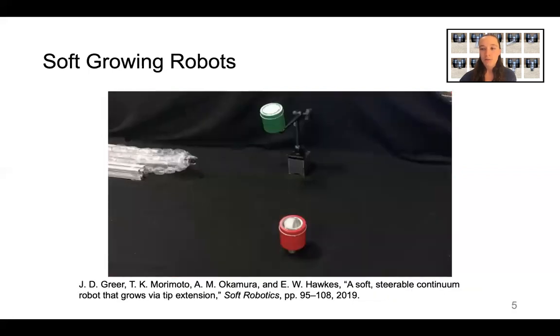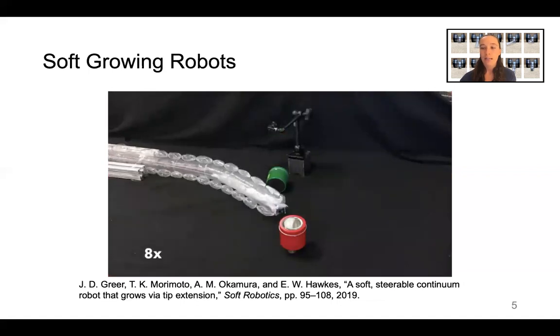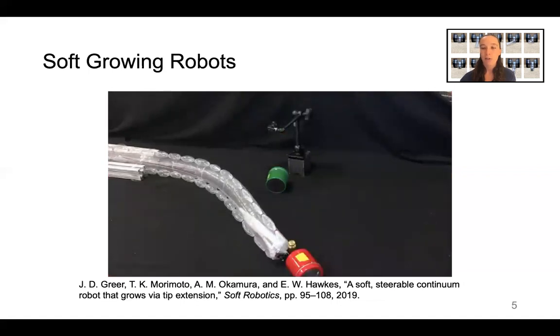The addition of external actuators such as pneumatic artificial muscles outside their body can allow three degree of freedom control of their tip position and the force applied to their environment during growth.